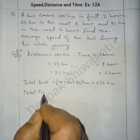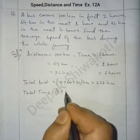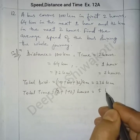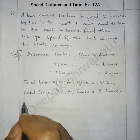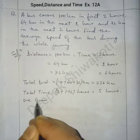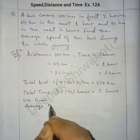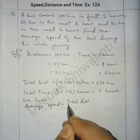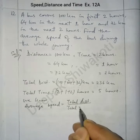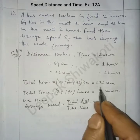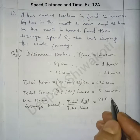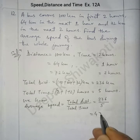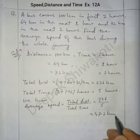Total time equals 2 plus 1 plus 2 hours, that is 5 hours. Average speed equals total distance divided by total time, so 236 kilometers divided by 5 hours, which gives us 47.2 kilometers per hour.